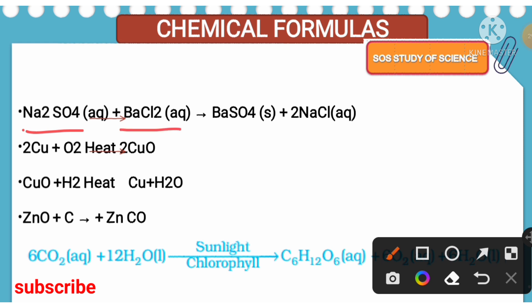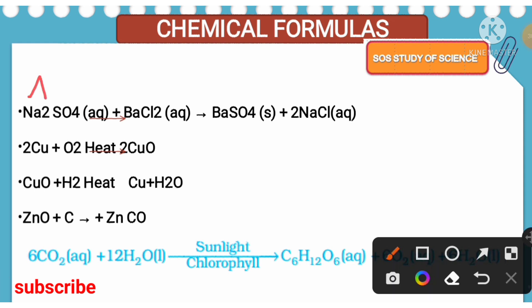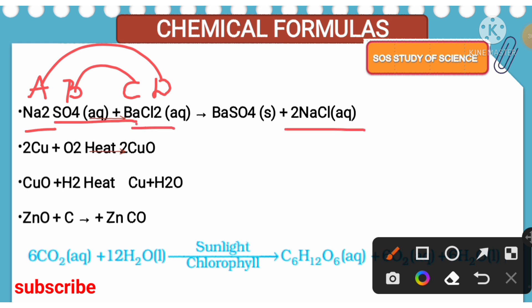Sodium sulfate combines with barium chloride — barium sulfate and sodium chloride are formed. This is an example for double displacement reaction. According to double displacement reaction, exchange of ions takes place: sulfate is an ion, chlorine is an ion, and they both exchange. As a result, barium sulfate is formed and sodium chloride is formed. You can represent this as: sodium as A, sulfate as B, barium as C, chlorine as D — A always combines with D, and B always combines with C. Sodium combines with chlorine to form sodium chloride, and barium combines with sulfate to form barium sulfate.